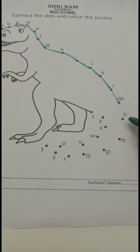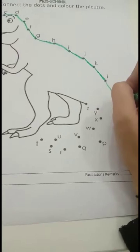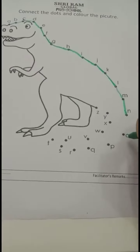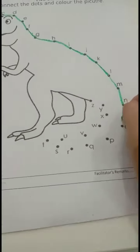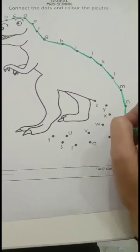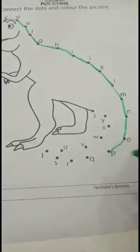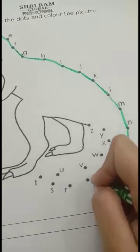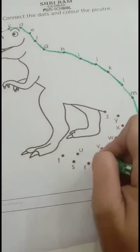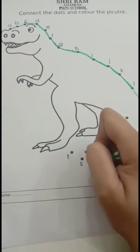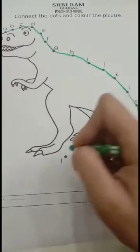M, N. Very good. So let's move forward — N. Then which letter will come after N? O. Very good. Let's connect the dot, letter O. Now P. O, P. Very good. Now after P? Q. So let's move forward — Q. Then after Q? R. Let's move forward — R. Then S. S.